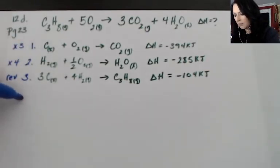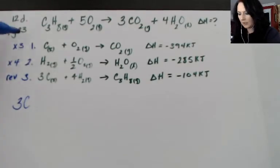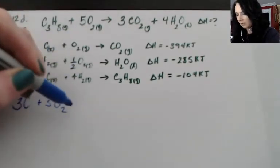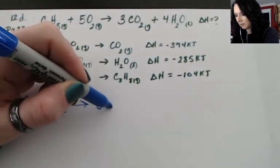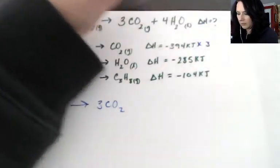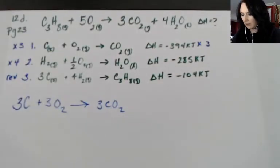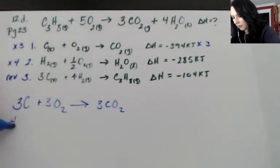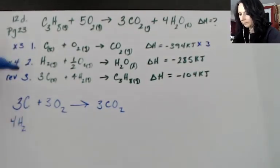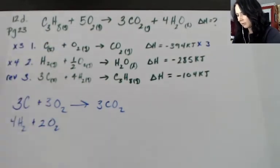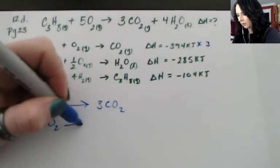So this is now 3C and 3O₂ and 3CO₂. I'm going to also multiply that delta H by three. I'll do that at the end and make sure that everything here is working first. The second one I'm going to multiply by four so 4H₂, four times a half would give me 2O₂, and then 4H₂O on my product side.